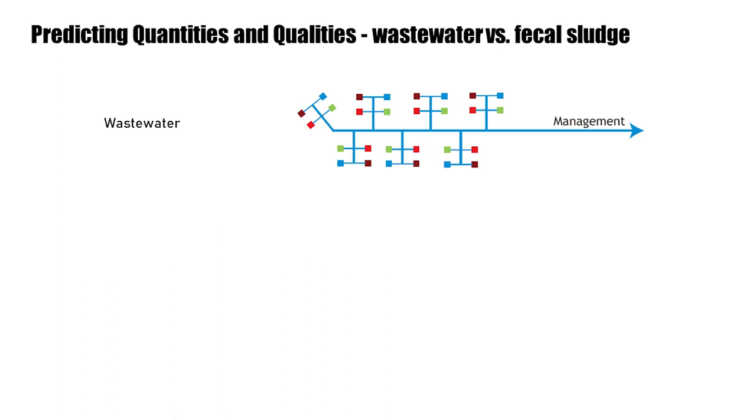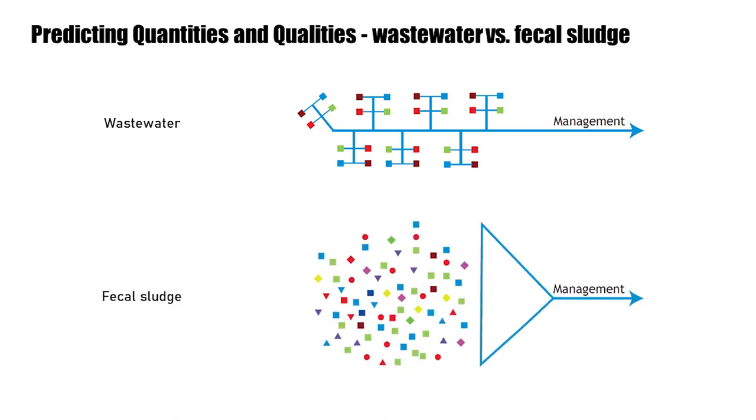For wastewater, it is relatively straightforward to make assumptions to predict quantities and qualities, as it is typically known how many household connections there are to a sewer and average per capita water usage. But for fecal sludge, there are typically no records of the existing situation, and so we don't know how many on-site sanitation systems there even are, which types, or how many people are using them.